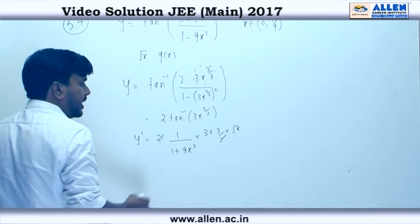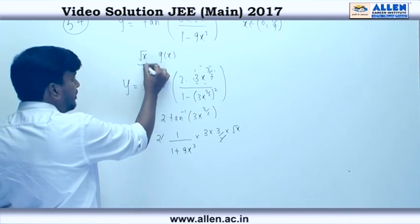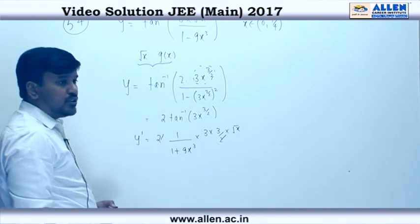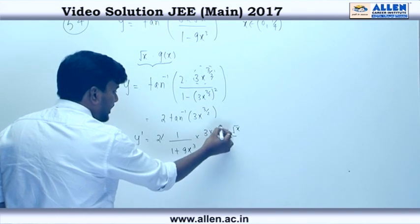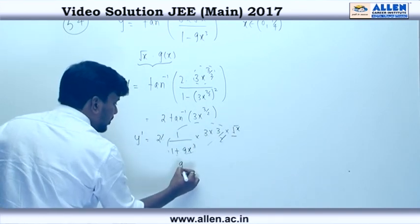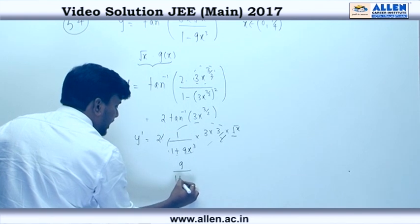Ye 2 cancel out hojaega and now we can see, since the derivative is in the form of root x into gx, so root x hum log hata deate. gx, so root x is nothing but 9 upon 1 plus 9x cube.